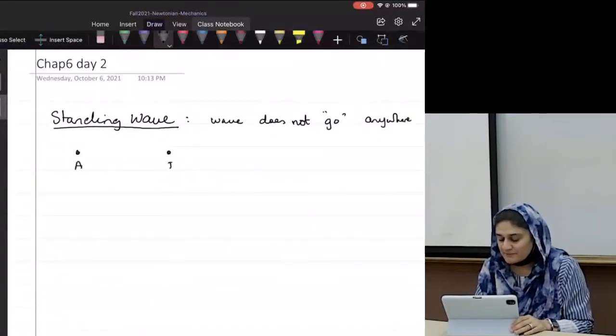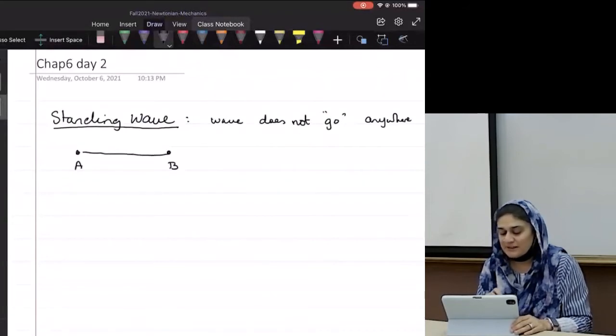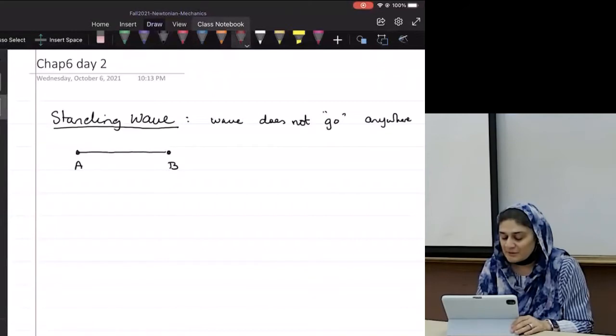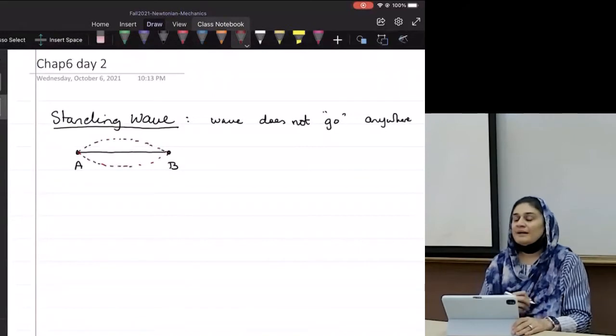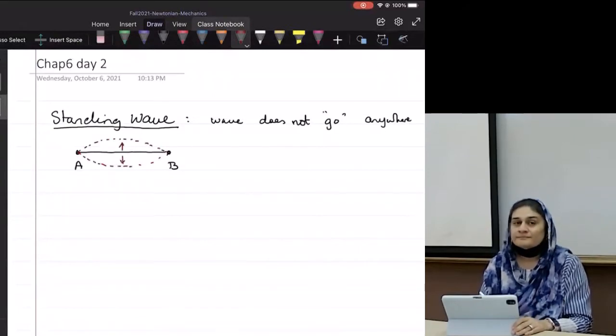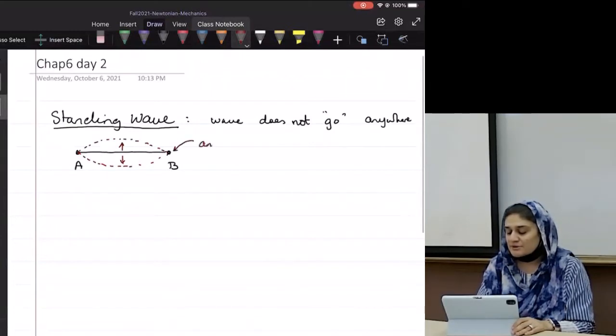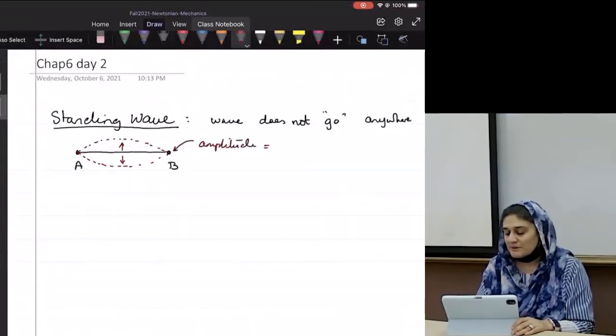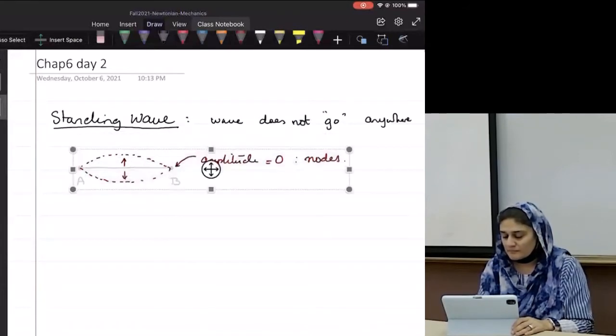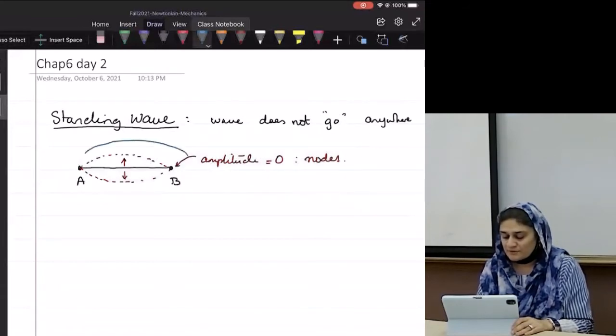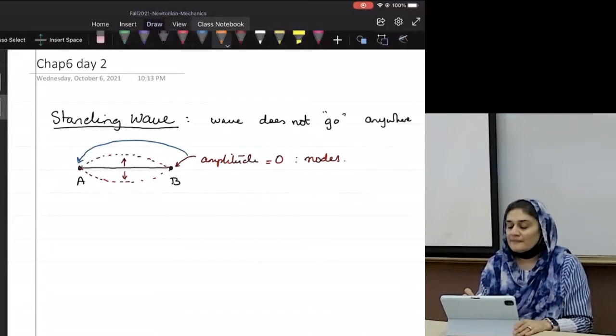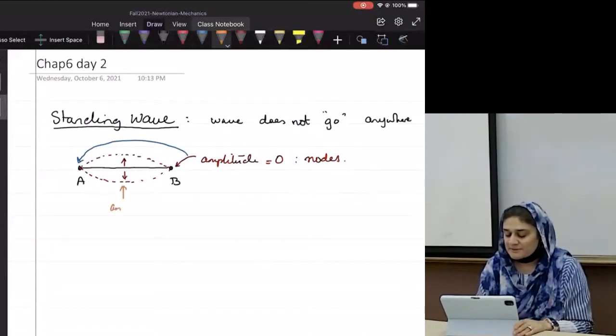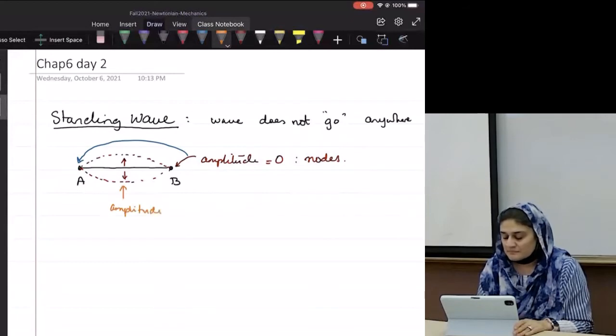So if these are my points A and B, and this is my string in between A and B, then a standing wave will be a wave when the string vibrates back and forth. So these points where the amplitude equals zero are called nodes. And the spot where the amplitude is maximum is called the anti-node.